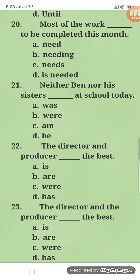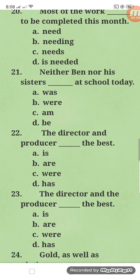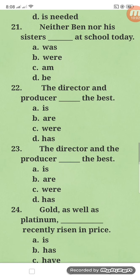Number twenty-one: neither Ben nor his sisters blank. For the neither/nor and either/or rule, you always take the nearer subject. Here the nearer subject is 'sisters,' which is plural, so we take a plural verb — that is 'were,' letter B.